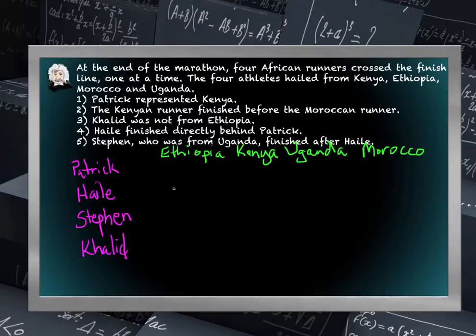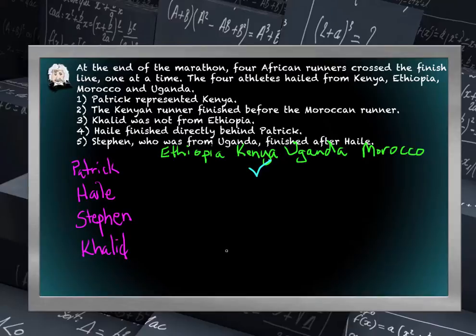The approach is to link each runner to their respective country by sifting through the information provided. Patrick represented Kenya, so right away we can check that Patrick is from Kenya. The Kenyan runner finished before the Moroccan runner — that's ordering information, which we'll save for the second step. Khalid was not from Ethiopia, so we put a red X for Khalid next to Ethiopia.